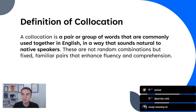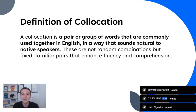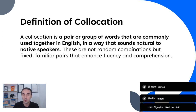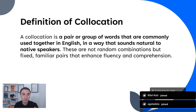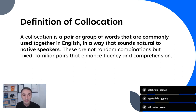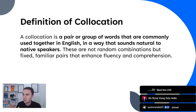So let's talk about what a collocation is. Think of a collocation as a perfect match of two words — a pair or group of words that are commonly used together in English in a way that sounds natural to native speakers.